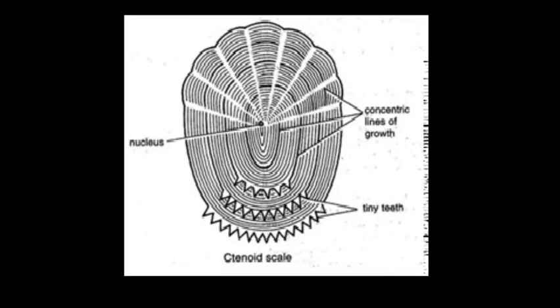These are characteristic of modern teleosteans like perches. They are similar to cycloid scales in structure and arrangement. These are more firmly attached and exposed free ends are not overlapped and wear numerous small comb-like teeth or spines.